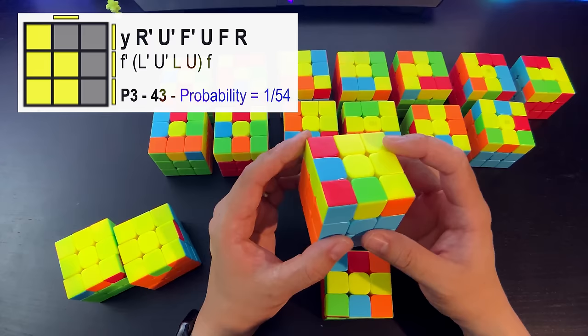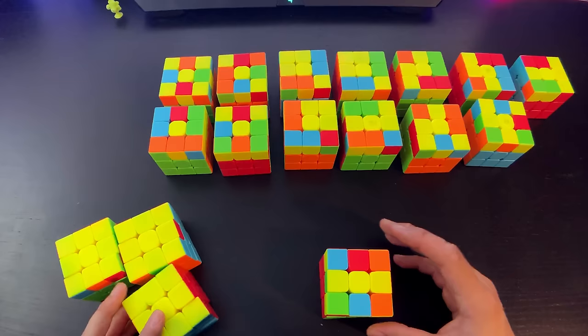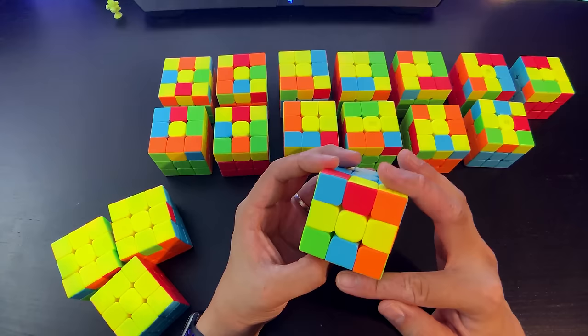This one was just like that original case, but because it's mirrored, front prime, inverted sexy move on the left, front solves that one. This one was a case that's easy to recognize: the horizontal bar with two bars on that side, headlights over here, and it's wide front, two sexy moves, front prime.